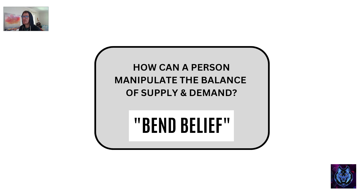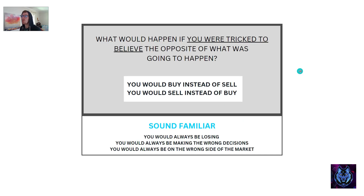How can a person manipulate the balance of supply and demand? If you have something you're selling, you have the supply of that thing. If there's high demand for it, the price goes up. But if you're selling something that everyone is selling and there's low demand, the price goes down. The answer to how it can be manipulated is simply by bending a person's belief. What would happen if you were tricked to believe the opposite of what was going to happen? You would buy instead of sell, sell instead of buy — you would always be losing and on the wrong side of the market.